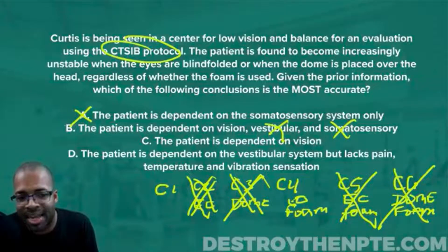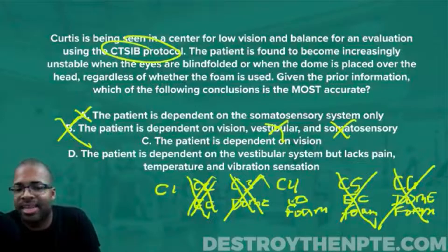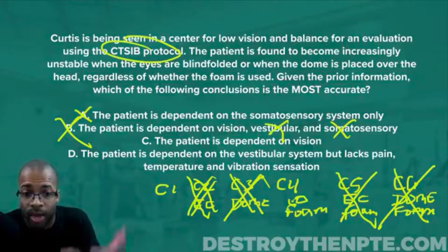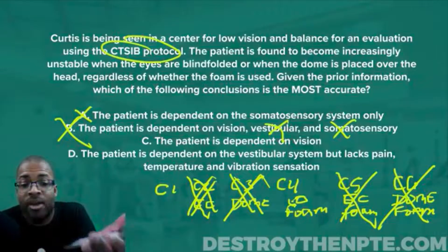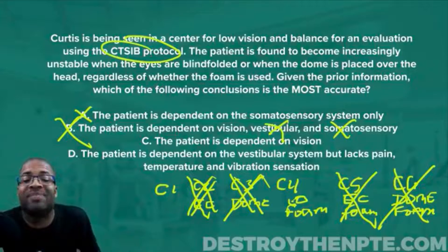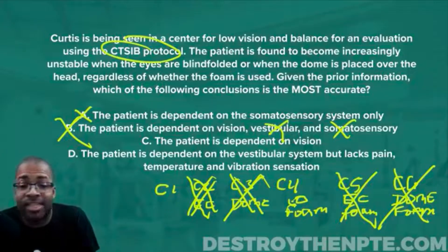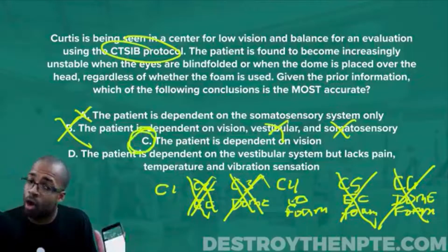Answer C says the patient is dependent on vision. The question doesn't mention instability in C1 or C4, so we can infer those are unaffected. C4 focuses on testing vision. We've already determined the somatosensory system isn't working and the vestibular system isn't working. So the only remaining option the patient can rely on to stand upright is the visual system. Answer C appears correct — the patient is dependent on vision.